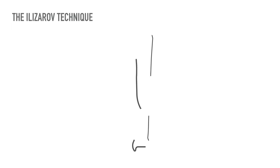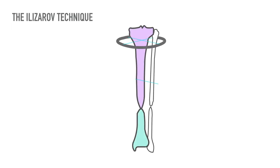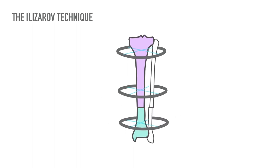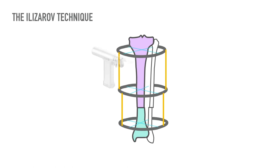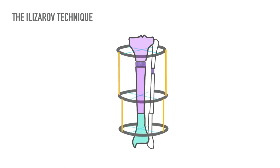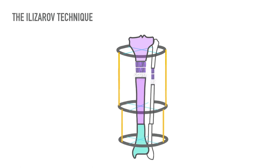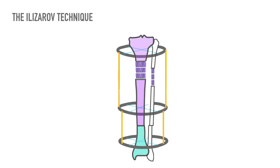In the Ilizarov technique, the Ilizarov frame is applied, the pseudoarthrosis is excised, and the fragments are compressed. Resection and acute compression is recommended as bone grafting can also be combined with the procedure. A metaphyseal osteotomy is performed and tibial lengthening is begun after 7 to 10 days. The highest union rates have been reported for this approach as opposed to longitudinal compression, side-to-side compression, or segmental bone transport.